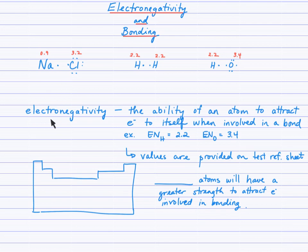The concept of electronegativity is really that idea of strength — or tug-of-war strength, if you will — the ability of an atom to attract electrons to itself when involved in a bond.